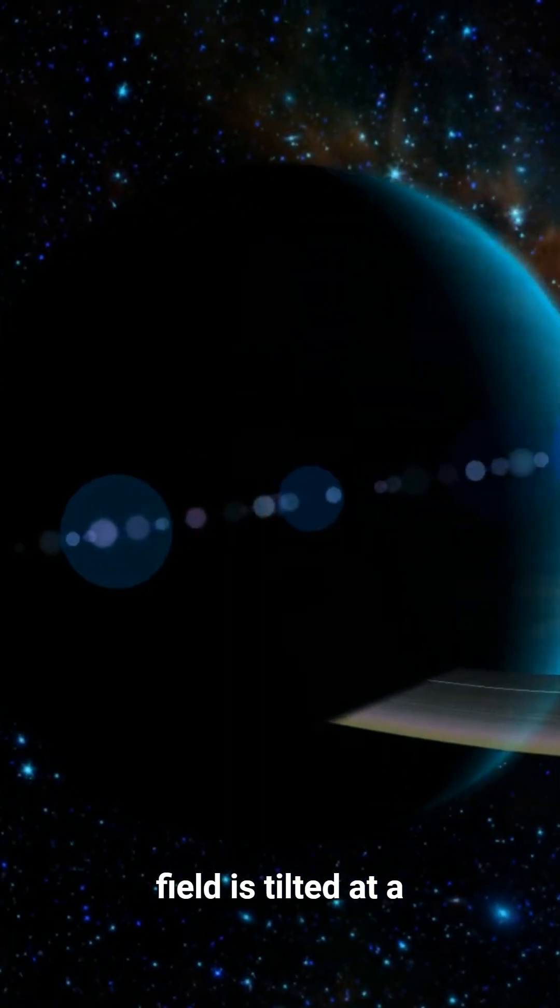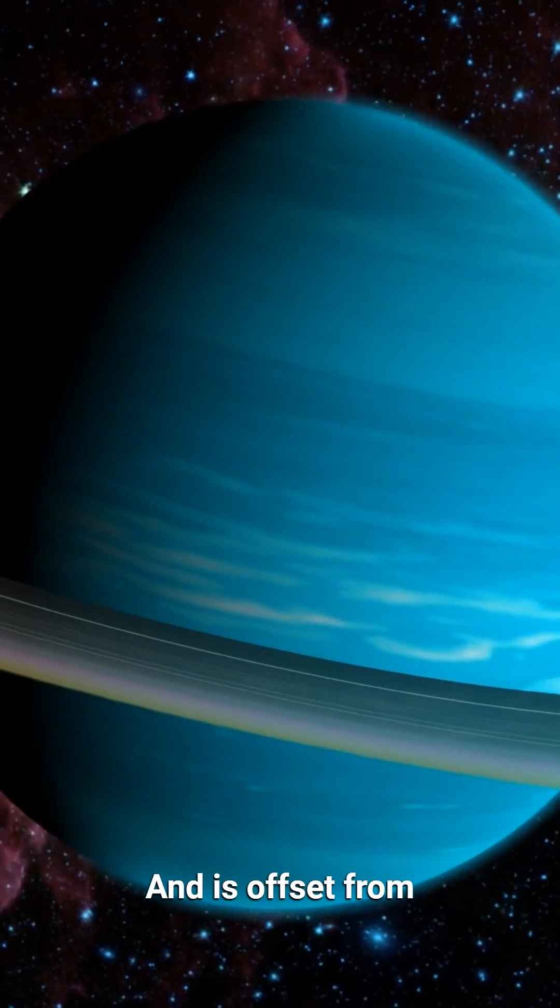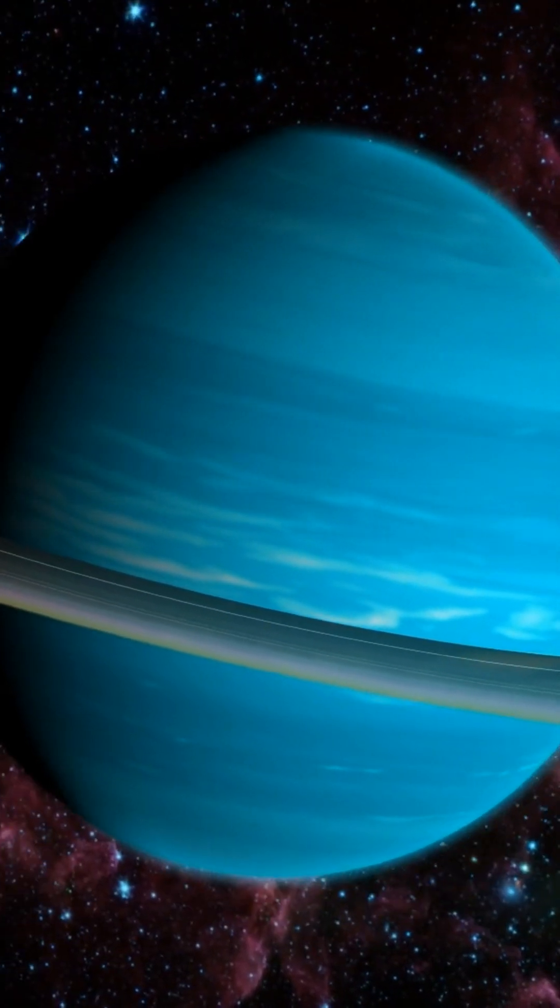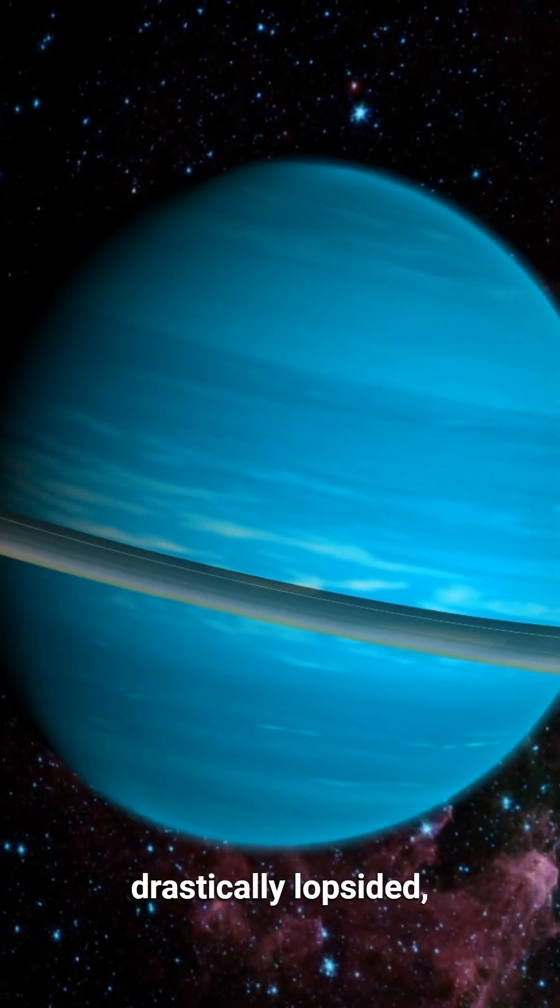Uranus's magnetic field is tilted at a staggering 59 degrees from its rotational axis and is offset from the planet's center. This orientation results in a magnetic field that is drastically lopsided.